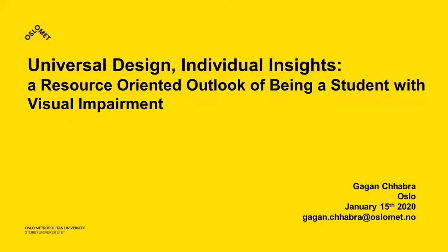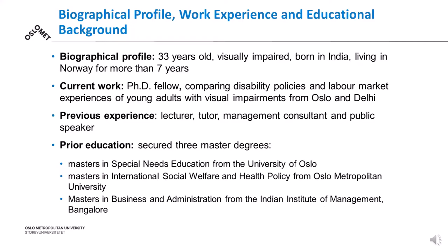Starting from being a student with visual impairment, moving on to a lecturer, public speaker, organizer, and a researcher with visual impairment. I'll round off the entire presentation with some theoretical ideas and concepts. The title of this presentation is 'Universal Design and Individual Insights: A Resource-Oriented Outlook of Being a Student with Visual Impairment.' You must be wondering — resource-oriented and impairment? How does that work? Because when you think about impairment, the images that evoke in your head are dependency, reduced ability, limitation — a tragic world view.